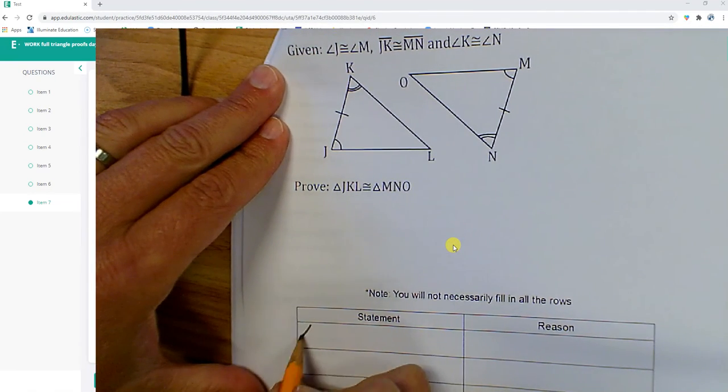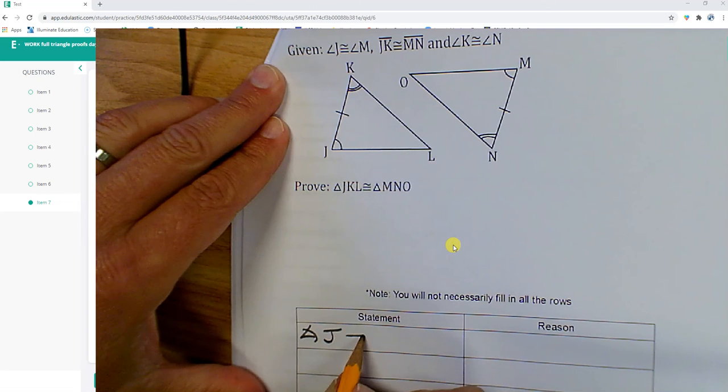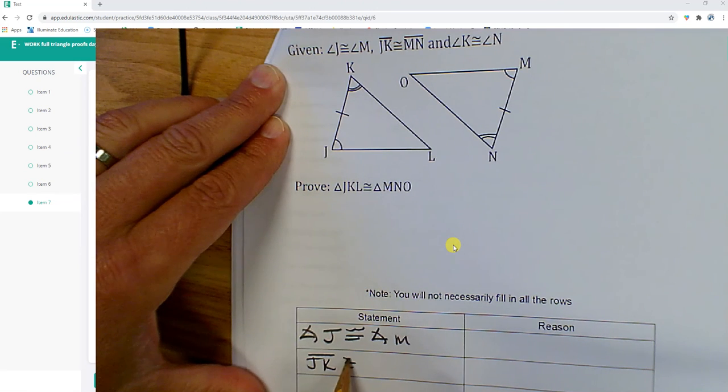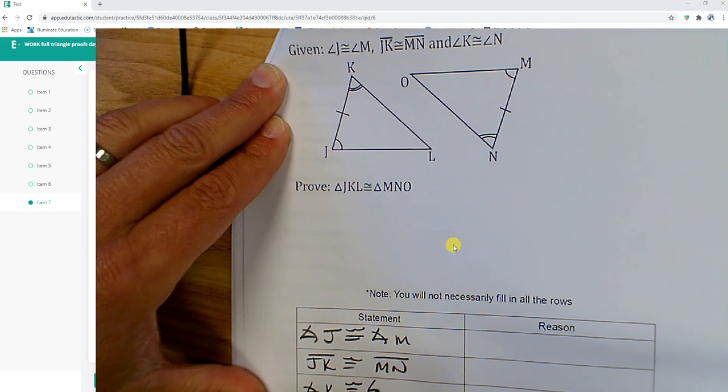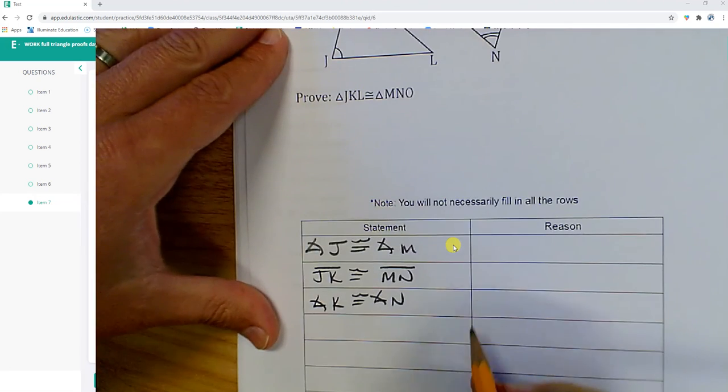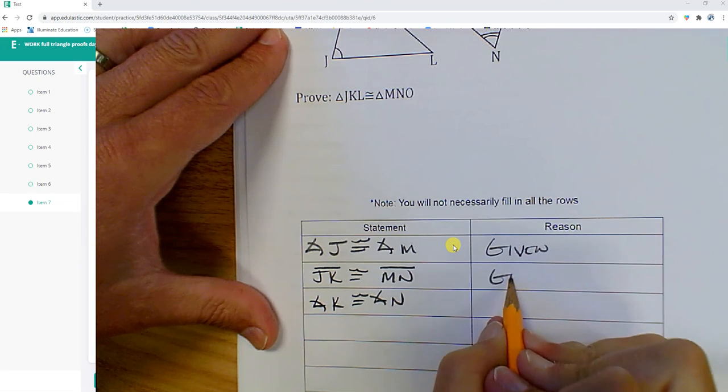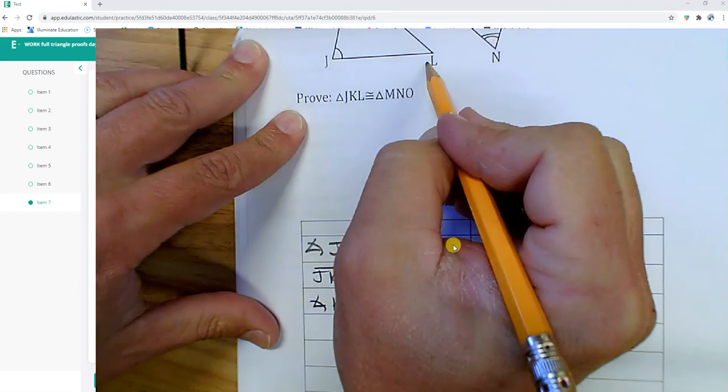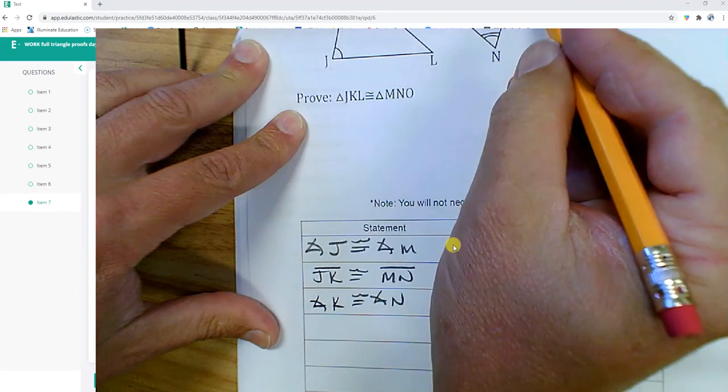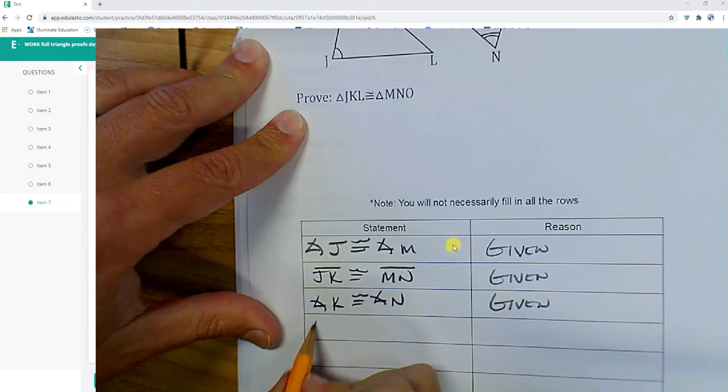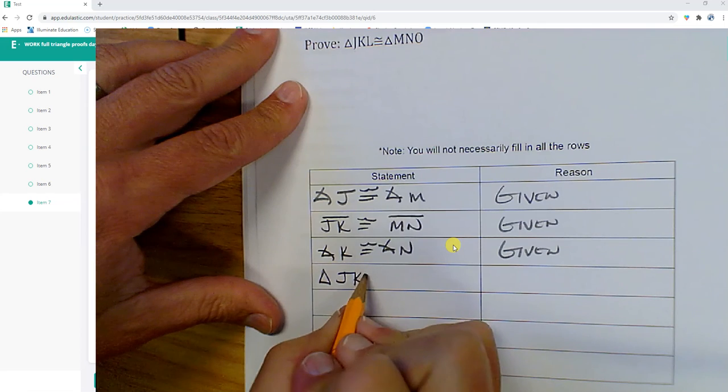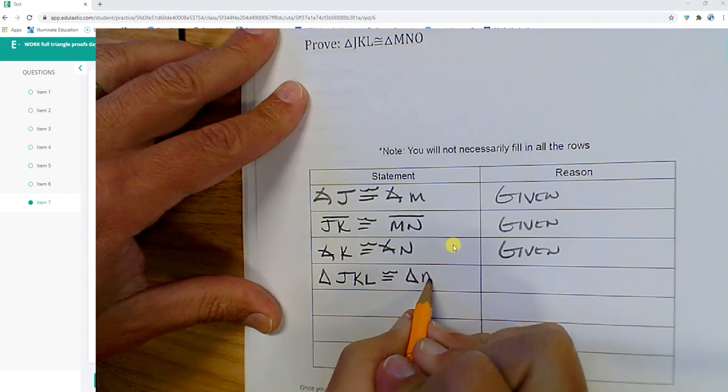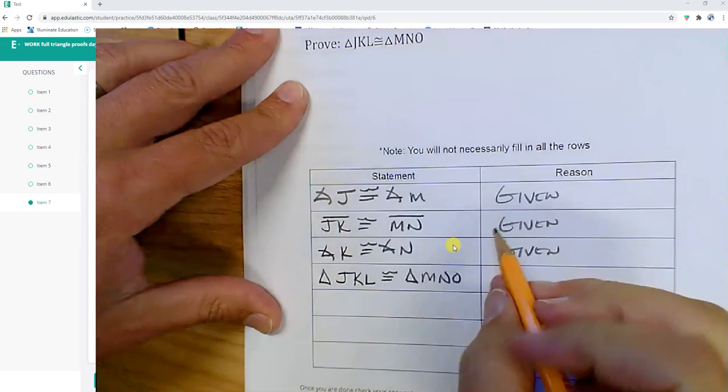J and M. Segment JK with MN. Angle K with angle N. And those are all given, given, givens. And I'm proving JKL, JKL with MNO, MNO. And that's by angle, side, angle.